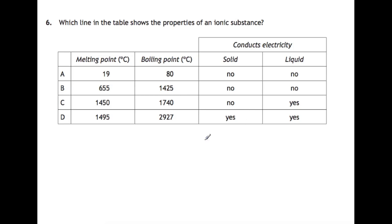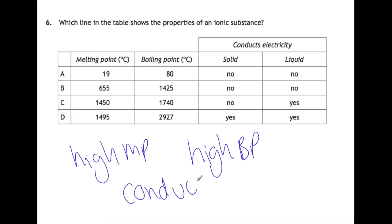Number 6. Which line on the table shows the properties of an ionic substance? So ionic substances have high melting points, high boiling points, and they conduct electricity when they are in liquid form only. So if we have a look here, we've got low melting and boiling points, and no conduction, that's likely to be a covalent molecular substance. Here we have relatively high melting and boiling points, but again, no conduction. That's likely to be a covalent network. Here we have high melting and boiling points, no conduction as a solid, but conduction as a liquid, so this is likely to be our ionic substance. And here you have high melting and boiling points, and conducts as both a solid and a liquid, so that could be a metal.